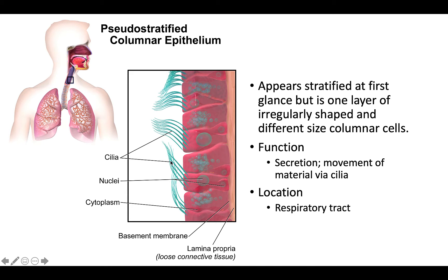Not all columnar epithelium is ciliated, but when we're talking about the respiratory tract, it is ciliated, and that's to help move the mucus throughout the respiratory tract to propel different things that you might be breathing in away from the cells.